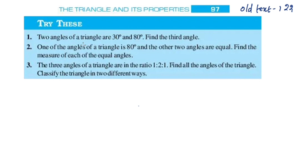Let's try this first question. Two angles of a triangle are 30 and 80 degrees. Find the 3rd angle. In a triangle, there are 2 angles of 30 and 80 degrees. We are going to find the 3rd angle.